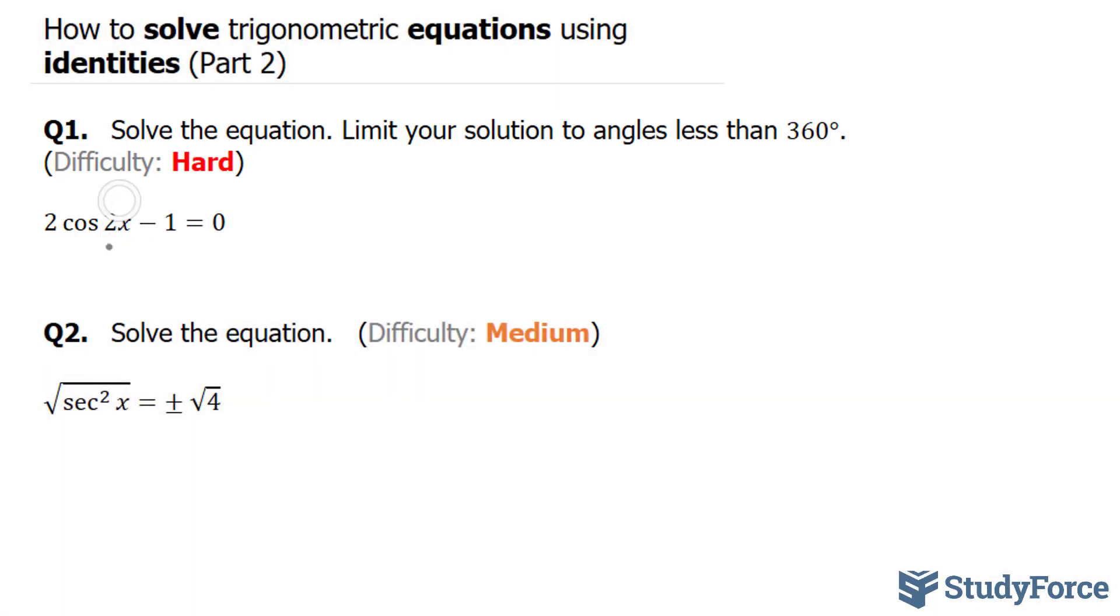So our task is to solve for this x, and the first step is to move minus 1 to the right side. If you do that, you end up with 2 cosine of 2x is equal to positive 1. Dividing both sides by 2 to isolate for cosine 2x eliminates this 2, giving us cosine of 2x is equal to half.